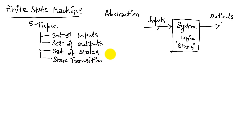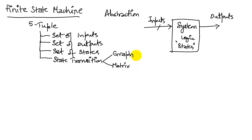State transitions describe how you transition from one state to another. We use two different ways of describing this: one is a graph — a state transition graph — or a state transition matrix, which is commonly used in the literature. In this module and in this class, we will primarily use a state transition graph, which we will call an STG. The last element of the tuple is the output determination.